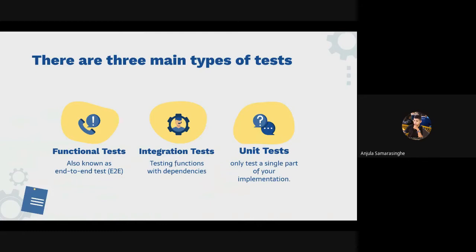With unit tests, there are no dependencies or integrations — it's just a plain function where we check that we get the correct output for our input. The next one is the integration test. With integration tests, we are checking functions that usually have API calls or try to access the file system — things that have dependencies.